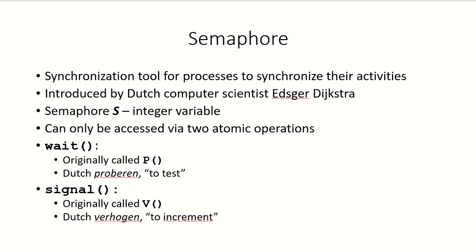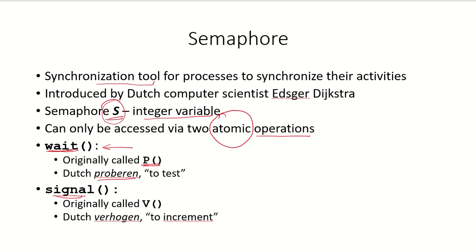Semaphores are a synchronization tool for processes to synchronize their activities, and they were introduced by the Dutch computer scientist Dijkstra. A semaphore is an integer variable and it can be accessed via two atomic operations: the wait operation and the signal operation. Both operations are atomic in nature, meaning when they are being performed they cannot be interrupted by any other process.